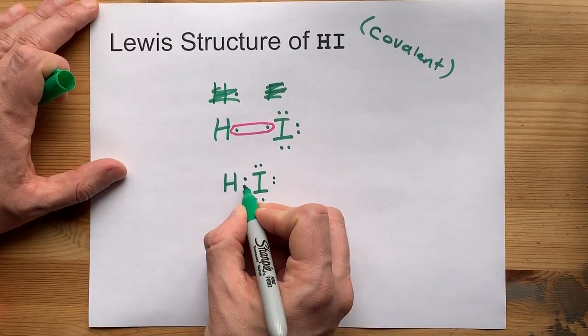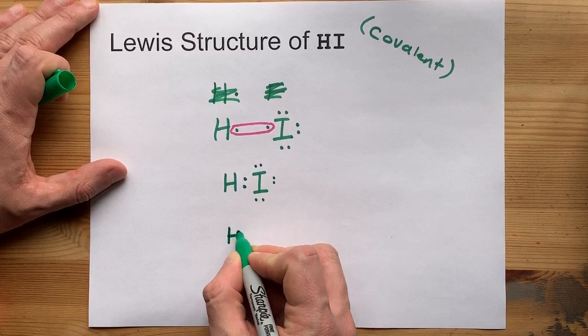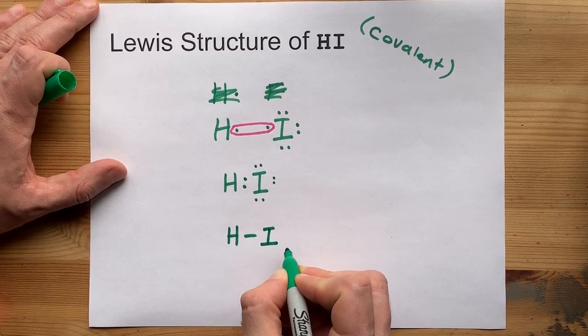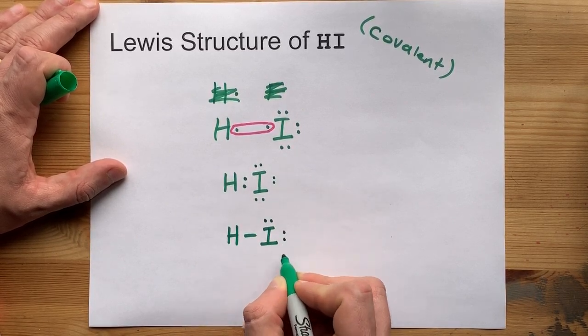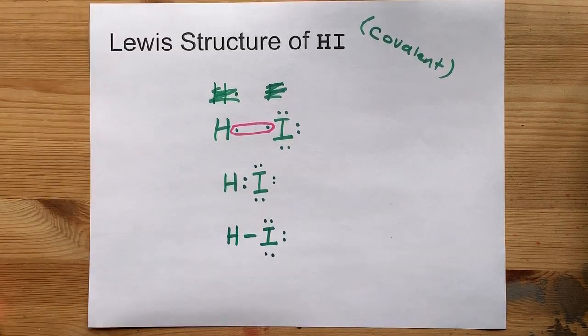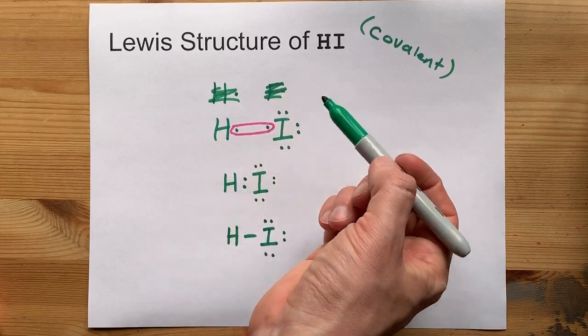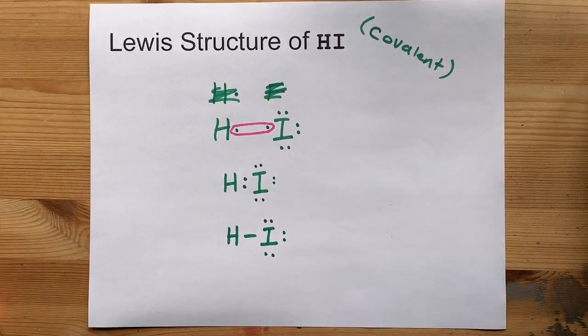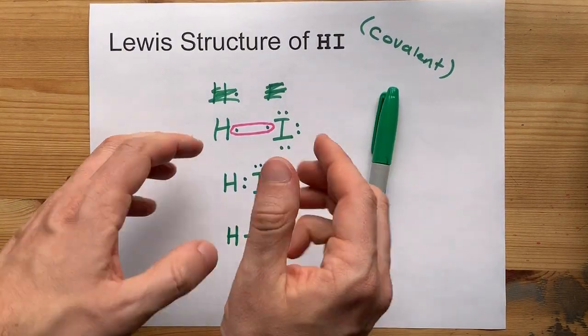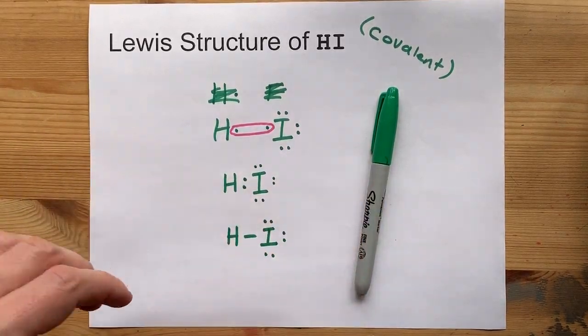By convention, we write this bonding pair of electrons as a single line. We don't replace those with lines, although sometimes I see teachers do it. And this is the complete Lewis structure of HI. I even showed you how it comes together. It's beautiful. Just like life. Take care.